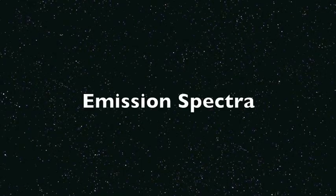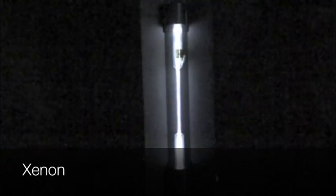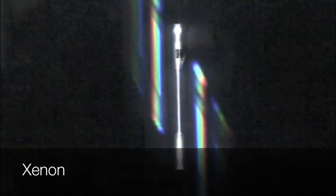What you will see in this video are vials of elemental vapors that have been excited by 20,000 volts of electricity. As the excited electrons fall back down to their lower energy levels, they give off light, as you can see in this xenon.